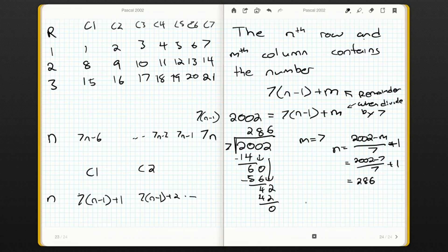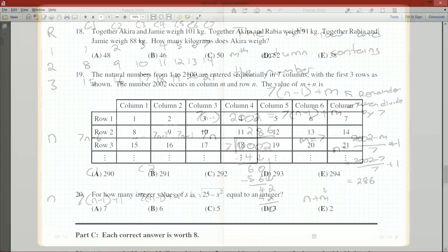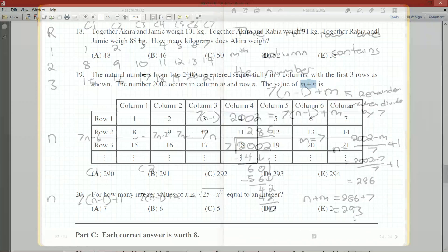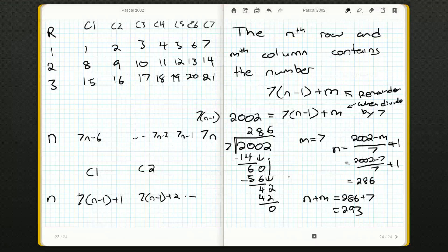And so we want the value of N plus M, right? Just double check what the question is actually asking for. N plus M. Okay. So that's going to be 286 plus 7. That's going to be 293. And now let's see, is that one of my possible answers? It should be. There it is, D, 293.